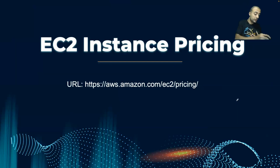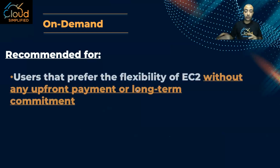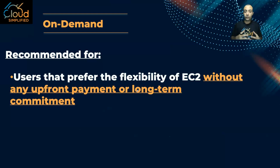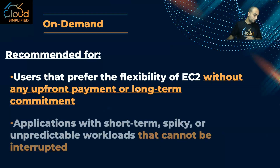Now we're going to see in this lesson what are the different instance pricing options for EC2 instances — I'll put the link in the video description if you want to explore it yourself. The first payment option is called On-Demand. On-Demand is suitable and recommended for users that want flexibility — users that don't want to commit and don't want to pay anything upfront.